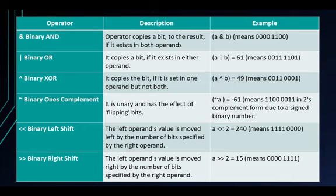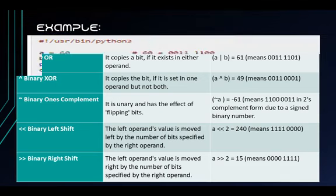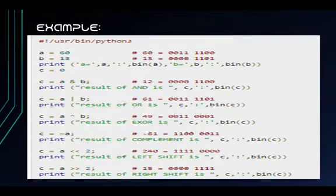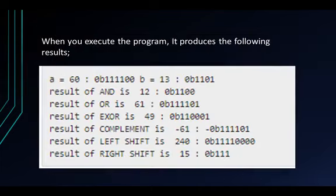In the example, we will use the pound sign to write the binary numbers of the variables, and we will use the bin() syntax to write the values of the variables. Using this code, the program will produce the following results.